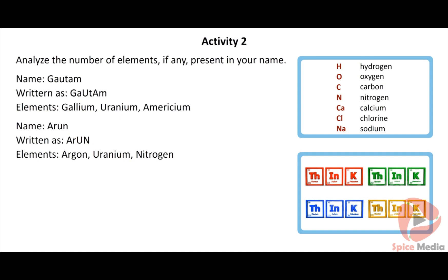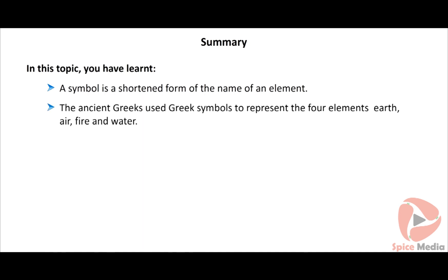In this topic you have learned: A symbol is a shortened form of the name of an element. The ancient Greeks used Greek symbols to represent the four elements: earth, air, fire and water. Alchemists used pictorial symbols to represent the elements. Symbol of an element signifies name of the element and one atom of the element.